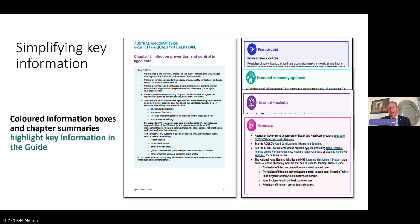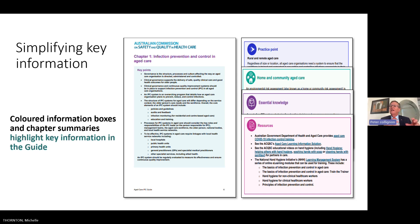This is a 200-page document in 10 chapters, designed so you can get to something in a hurry. Each chapter has its own heading so you can go straight to what you need. Within each chapter there's a one-page summary, practice points, points specific to community and home care to make it more practical, essential knowledge, and links to further resources. It's designed as a whole document but also so people can get to one spot quickly without having to read 200 pages.